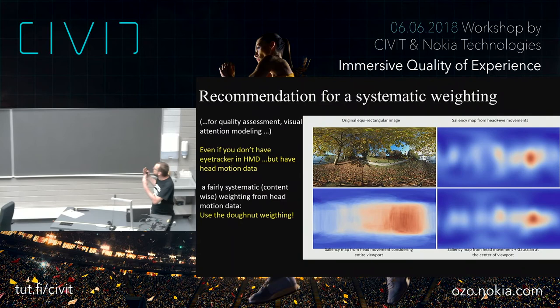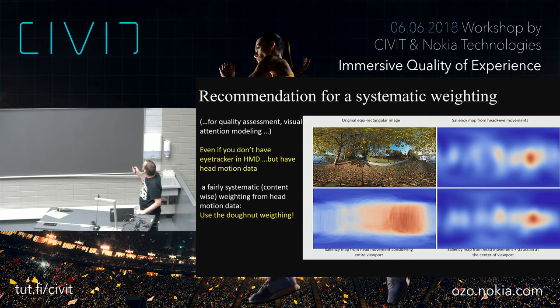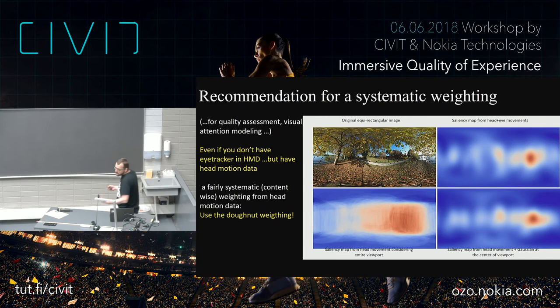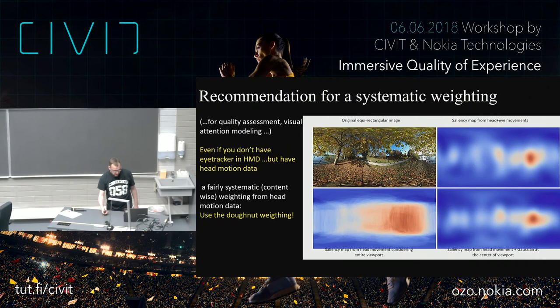Just to illustrate what this gives as a result: you have the ground truth for this 360 panorama, then what you do from head motion considering everything in the viewport, and then considering just the head motion data convolved with the donut — you get a result that's a pretty good approximation of what you would get with an eye tracker. That was the last thought I wanted to give you. Thank you very much for your attention.